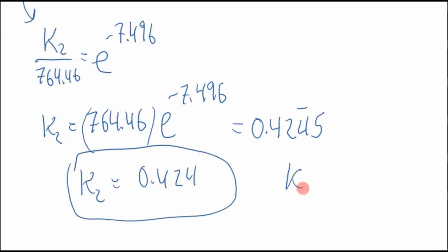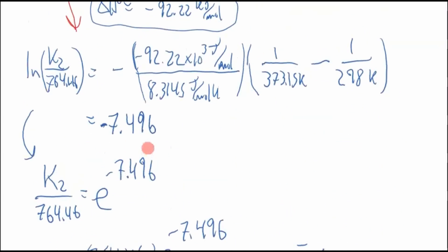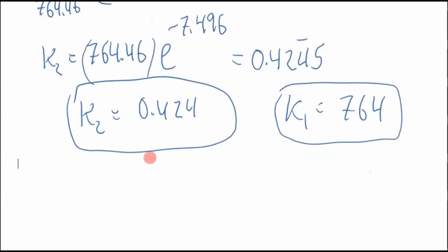It went down, right? K1, what was K1? 764. So it went down. This is 298K, this is 100 degrees Celsius. Oh, I thought I messed up my temperatures. 373.15 Kelvin. So when we went from this way, we increased the temperature, right? We increased the temperature.